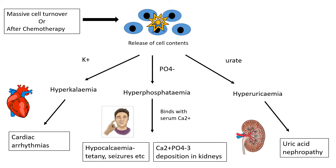Phosphate is also released, leading to serum hyperphosphatemia, and this binds with calcium that's already in the serum. This has two knock-on effects. First, the serum calcium will drop, leading to tetany and seizures. And the other thing is that the calcium phosphate bound substance can deposit in the kidneys and cause renal failure.